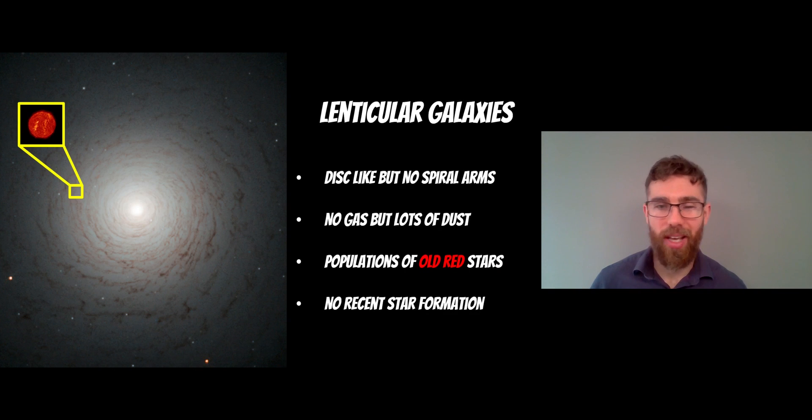They have populations of old stars. They don't have any recent star formation because they don't have any gas. So they share common features with a spiral galaxy and an elliptical galaxy. They have no gas, lots of dust, like elliptical galaxy. Populations of old red stars, like elliptical galaxy. No recent star formation, like elliptical. But they have a disk-like structure with a net rotation, which elliptical galaxies actually don't have. They are a bit more random in their motion. They don't have a net disk-like structure. So they kind of share features between the two types of galaxies.